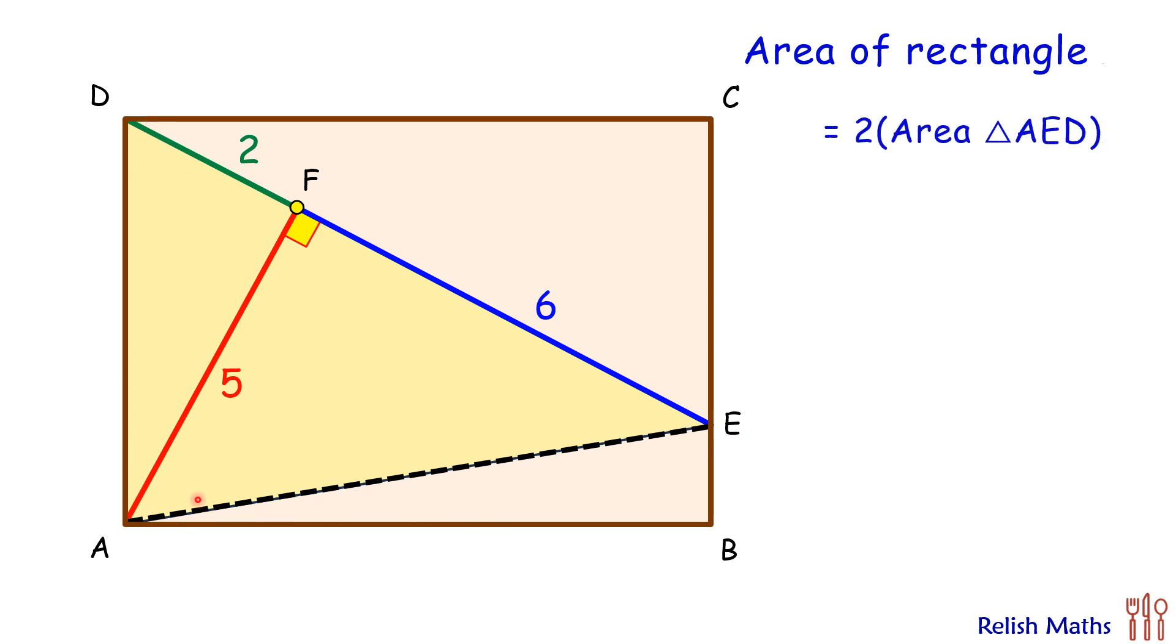And area of triangle AED is half of base, that is DE, into height AF. Putting the values here, DE as 8 and AF as 5, solving it we'll get area of rectangle as 40 centimeter square, and that's our answer.